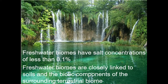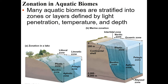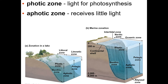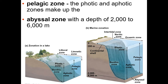Freshwater biomes have very little salt and are closely linked to the terrestrial biome — water runs off land and ends up in the water. The photic zone is the area that light penetrates, where a lot of photosynthesis happens. Below that, the aphotic zone gets little light, so there's less photosynthesis — but material produced above falls down and gets decomposed there. Aquatic biomes are often stratified based on light.